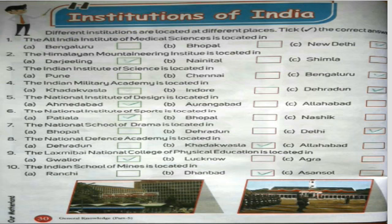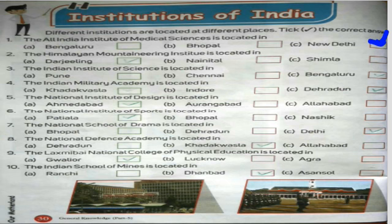Different institutions are located at different places. Take the correct answers. Different institutions of India are located at different places (alag-alag ashthano par). On the screen, the names of various Indian institutions are written in order. In which part of India each institution is situated, write the correct answer in the blank table in front of each.